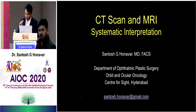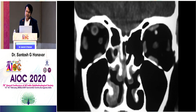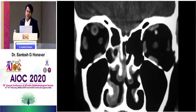A young male, 30 years old for example, comes to you with a sudden history of unilateral external ophthalmoplegia with complete ptosis and restricted ocular motility with loss of vision. Looking at this coronal CT scan, what is your diagnosis?